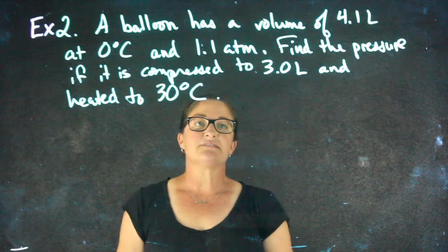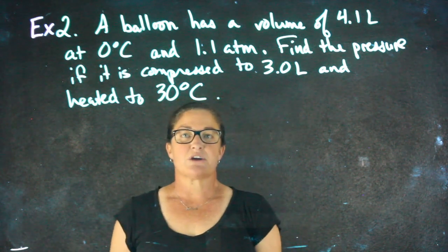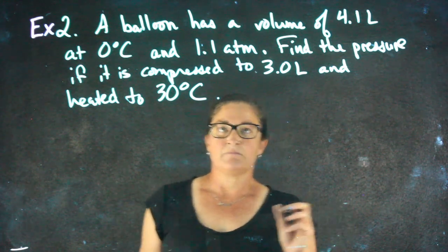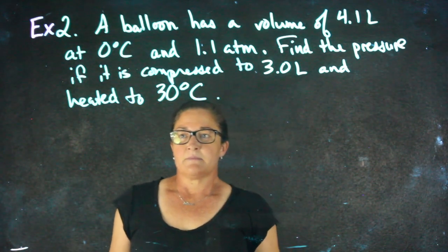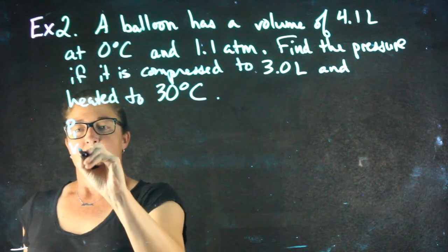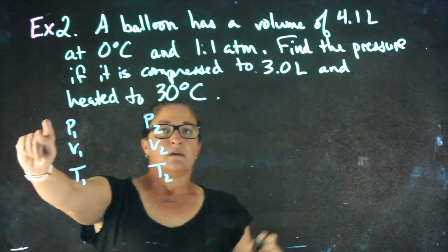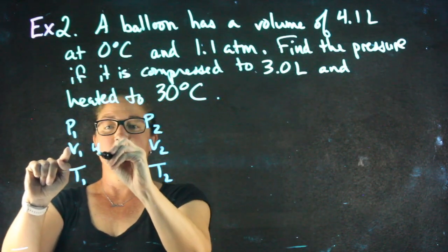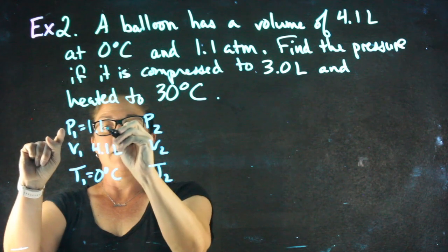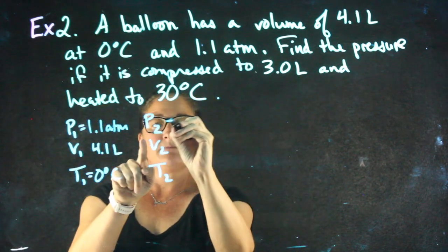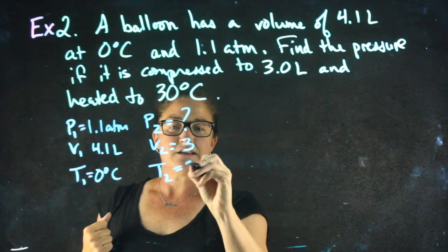Example 2. A balloon has a volume of 4.1 liters at 0 degrees Celsius and 1.1 atm. We're going to find the pressure if it's compressed to 3 liters and heated to 30 degrees Celsius. Now we are dealing with pressure, volume, and temperature all in the same problem. Which means I need to identify all of these variables. A balloon has a volume of 4.1 liters at 0 degrees Celsius and 1.1 atm. Find the pressure if it's compressed to 3 liters and heated to 30 degrees Celsius.